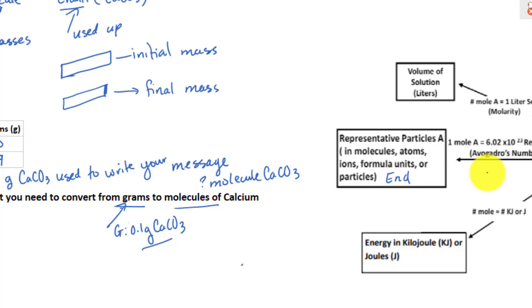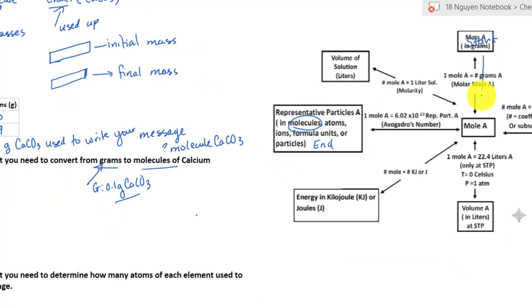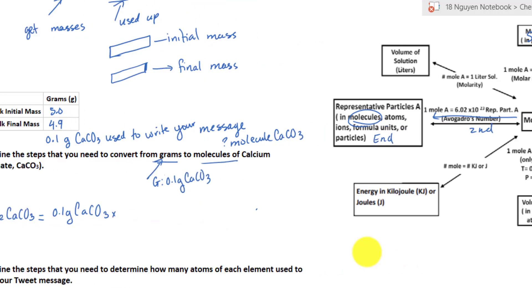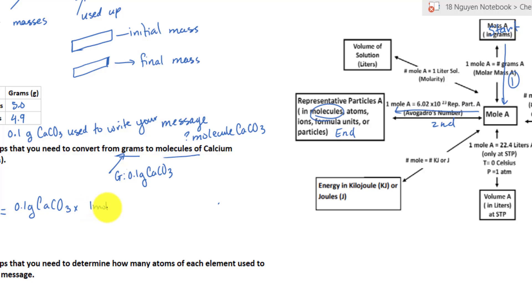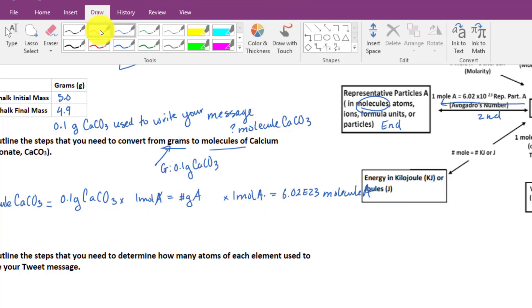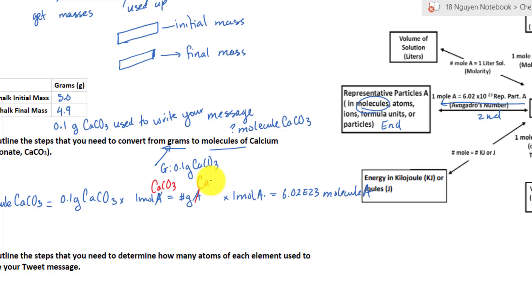To start from mass in grams all the way to molecules, what do we need? We need to go down, that's one conversion factor, and we need to go across, that's the second conversion factor. We are looking for molecules of calcium carbonate equal to, starting with our given as always, 0.1 grams of calcium carbonate times our very first conversion factor, which is one mole of A equal to the number of grams of A, times the next conversion factor, which is one mole of A equal to 6.02 times 10^23 molecules of A. Your A is your chemical, which is calcium carbonate.